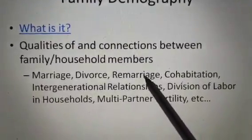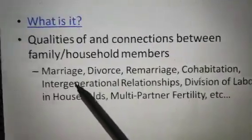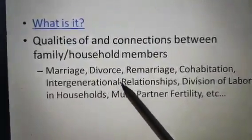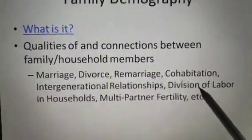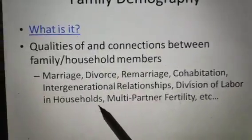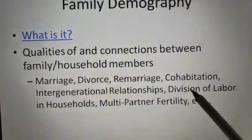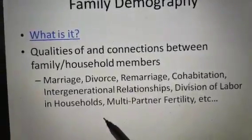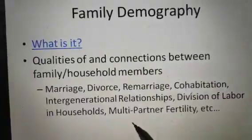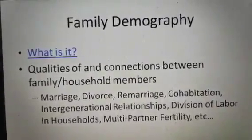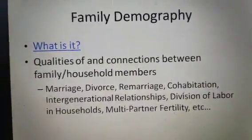Within Family Demography, there are various terms. There is marriage, which is an institution. Divorce is also an event. Remarriage is also an event. Cohabitation is also an event. Inter-generational relationships are also an event. Division of labor in households is also a process of family demography, and multi-partner fertility — these are all terminologies used for family demography.